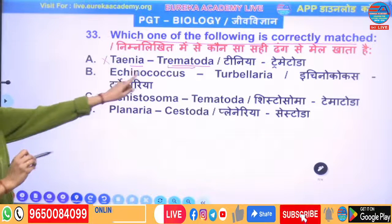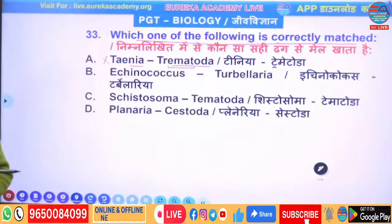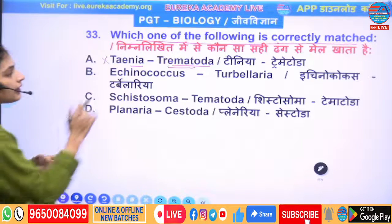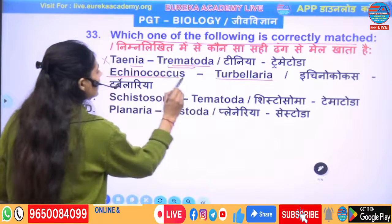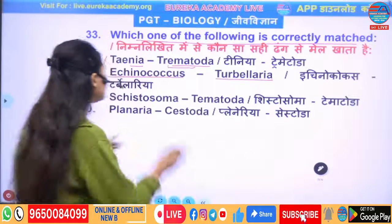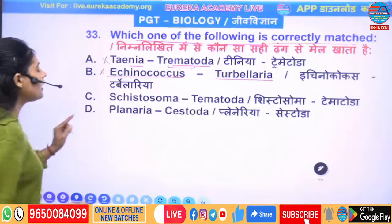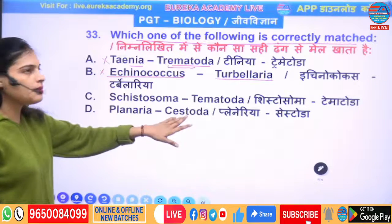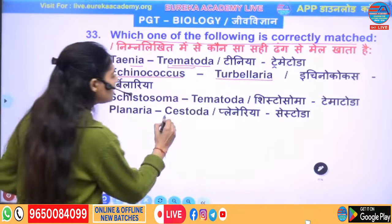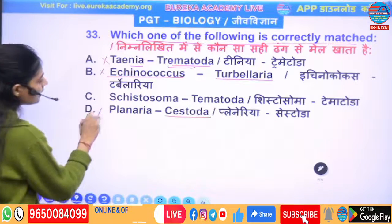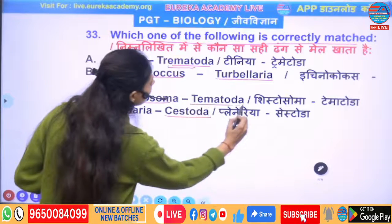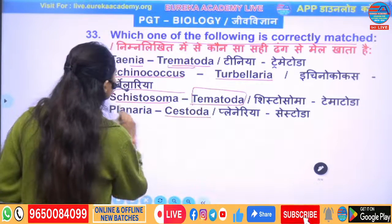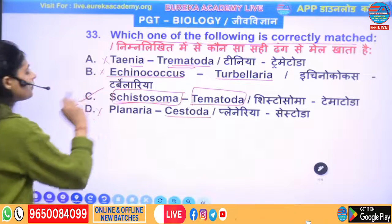After that, Echinococcus matched with Turbellaria — is that correct? Turbellaria is Class 1, and Echinococcus does not belong there; Planaria does. That is also wrong. Planaria is Turbellaria — also wrong as an option. Distomum matched with Cestoda — Cestoda is Class 2... the correctly matched option is option number C.